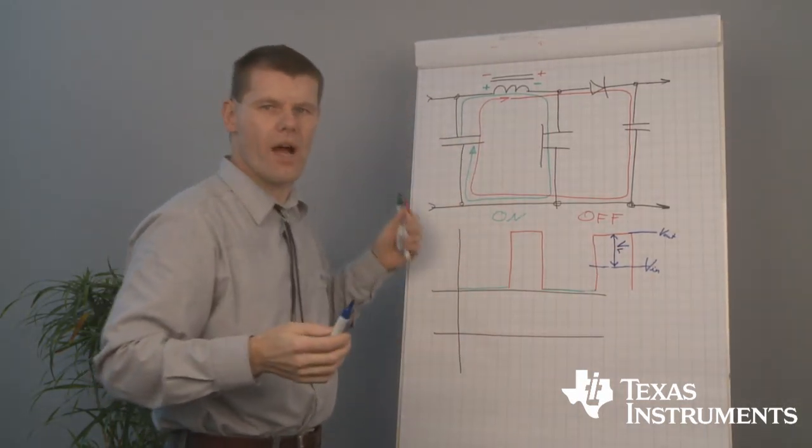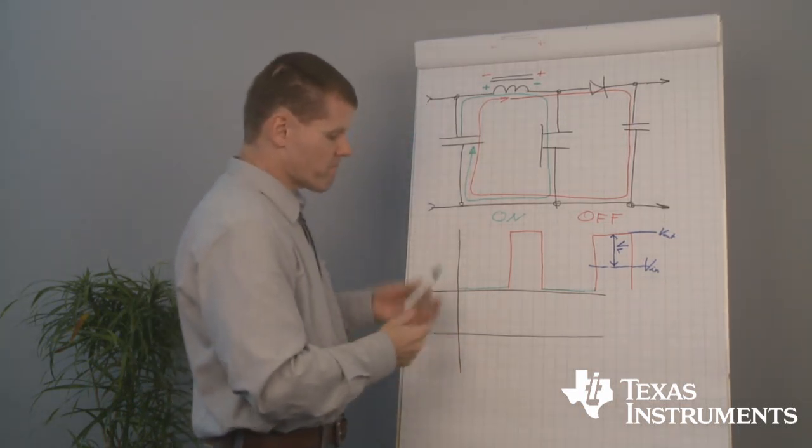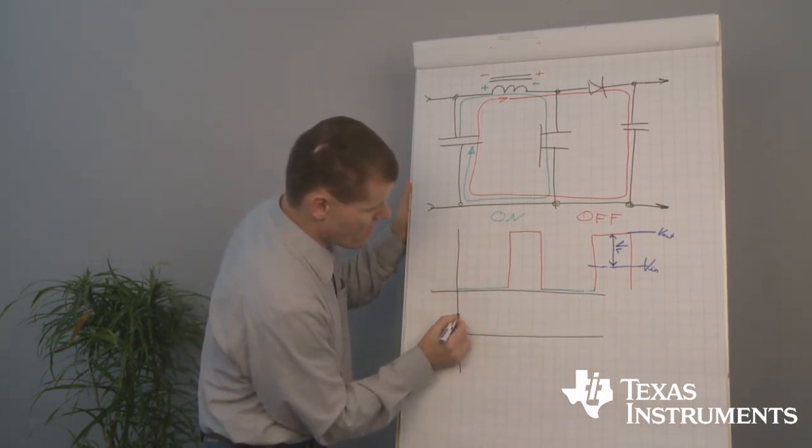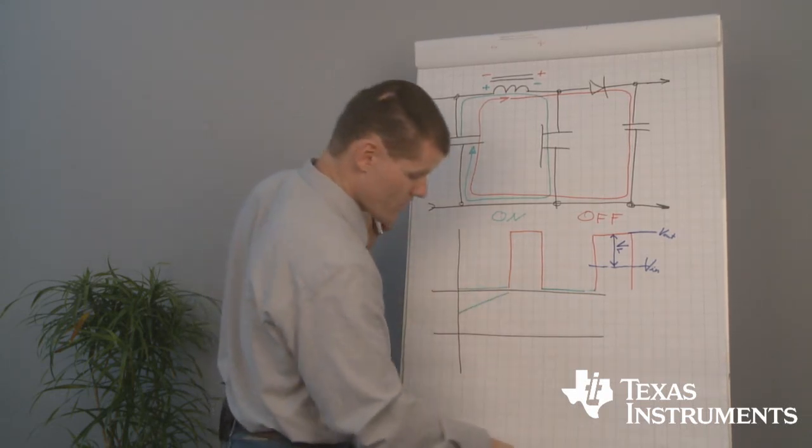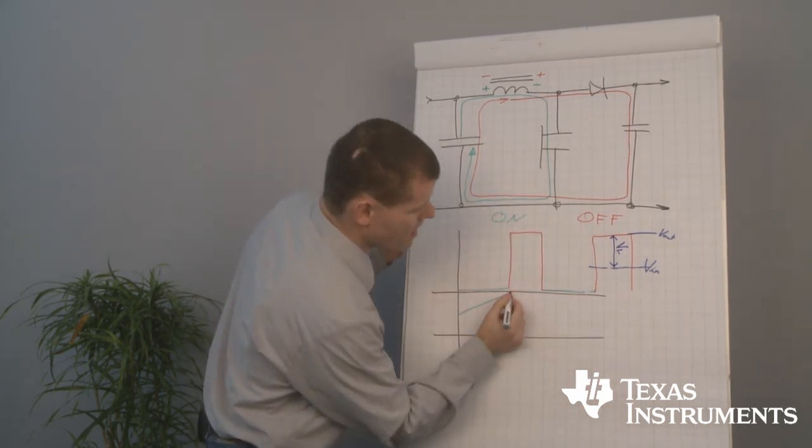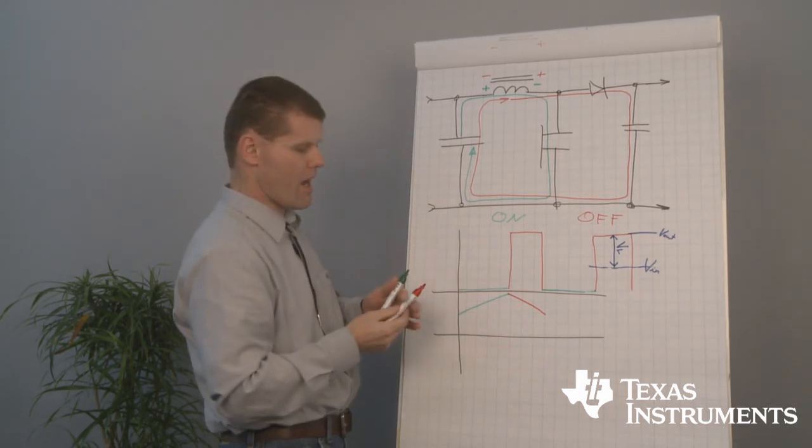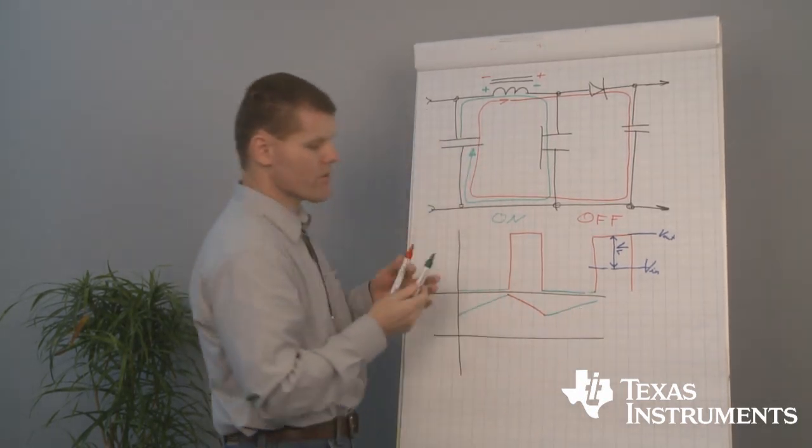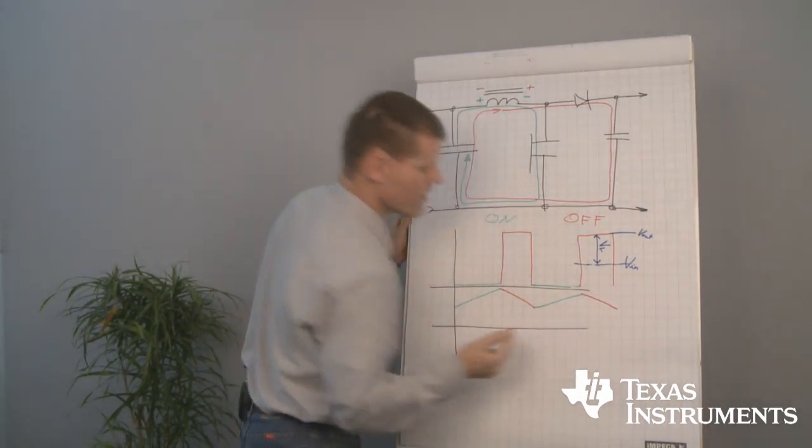And the currents, pretty the same, pretty close to what we can see inside the buck converter. Current increases due to inductance law. By opening the switch, current decreases. And again, current increases. And current decreases.